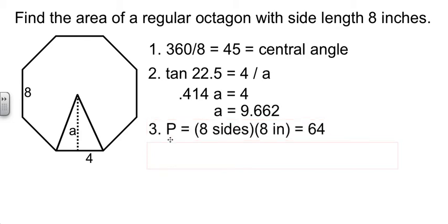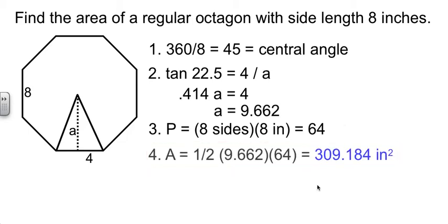Step three is find the perimeter. There's eight sides, each of them are eight inches, so my perimeter is 64. And now just put it into the formula, one-half times the apothem times the perimeter. And we get a final answer of just over 309 square inches.